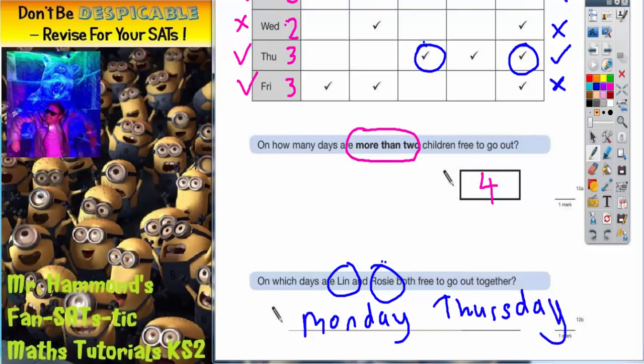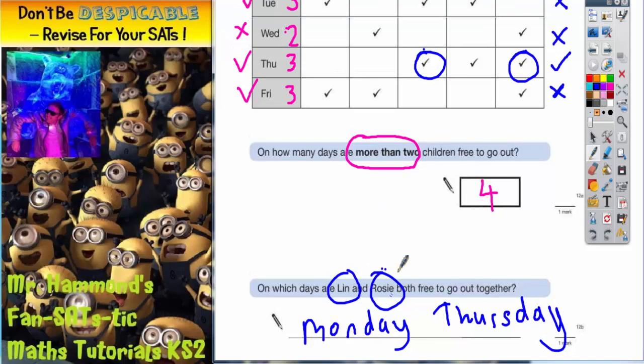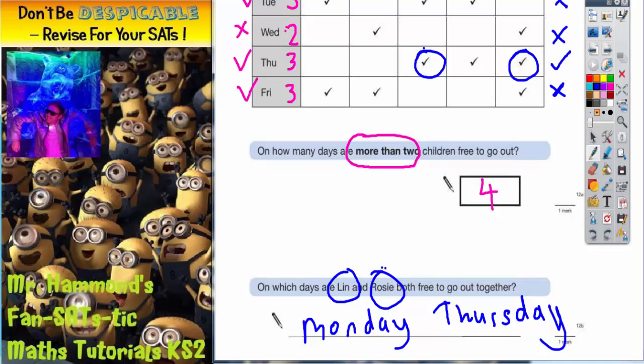But you can see that we've made those questions quite easy by simply understanding what the table is. You must not rush into just writing random things into your answers. You've got to make sure you understand what the table is saying first.